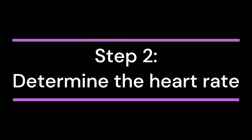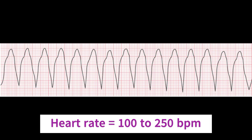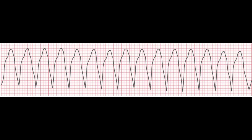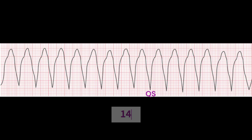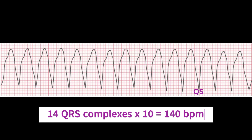Step 2: Calculate the heart rate. The rate of VTAC can vary, but it is usually between 100 to 250 beats per minute. In this example, we count the number of QRS complexes, or rather the QS waves, in this 6-second section, then multiply that by 10, and we get 140 beats per minute.